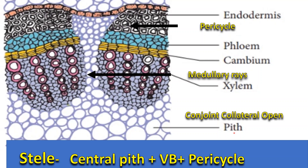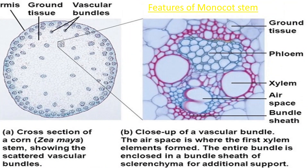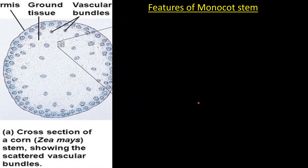I hope you are clear with the structure of the dicot stem. Now, this dicot stem differs from the monocot stem with respect to the following features.